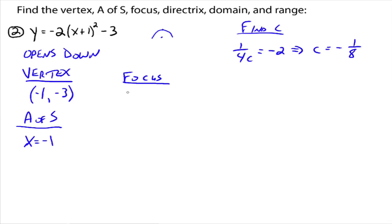You take the vertex and you say the focus is negative 1 and then negative 3 plus whatever the c value is. So it's negative 3 plus negative 1 eighth. So the focus is negative 1 and negative 25 eighths. That's the focus.